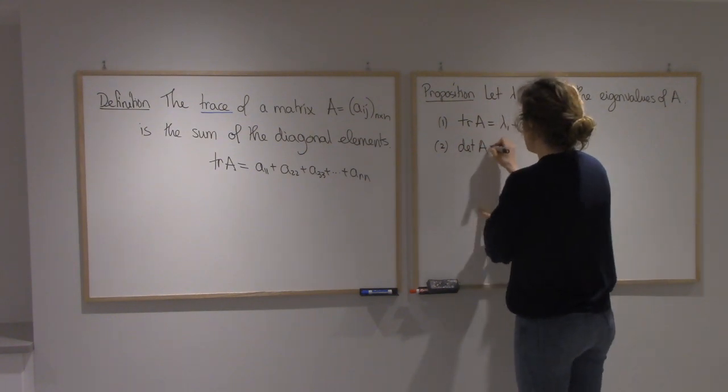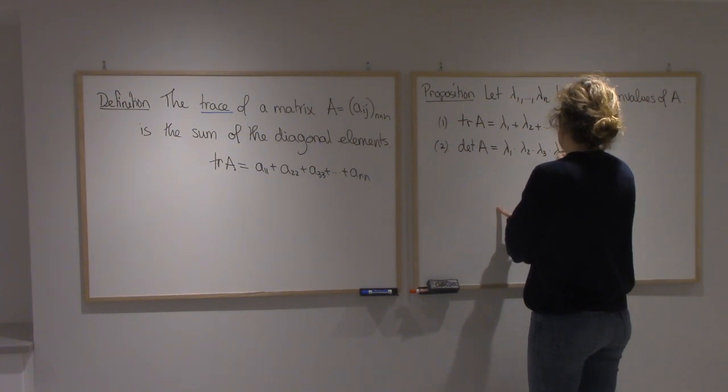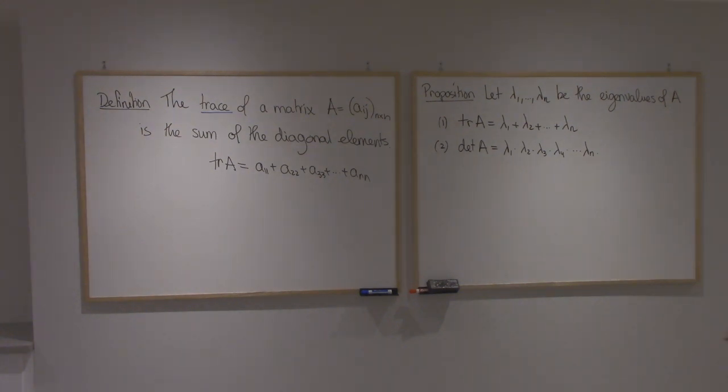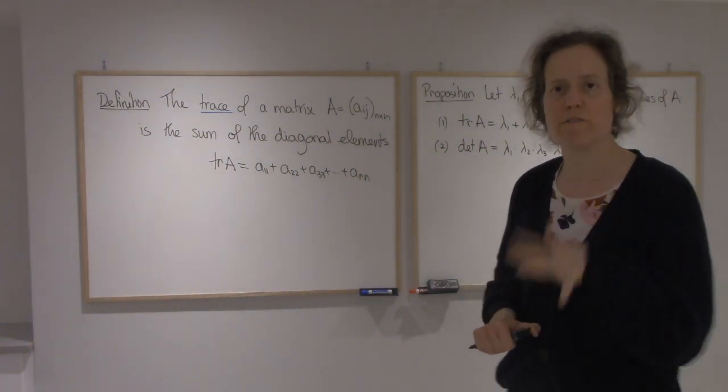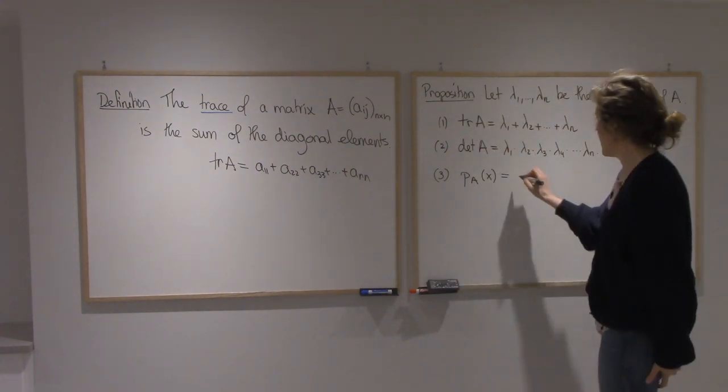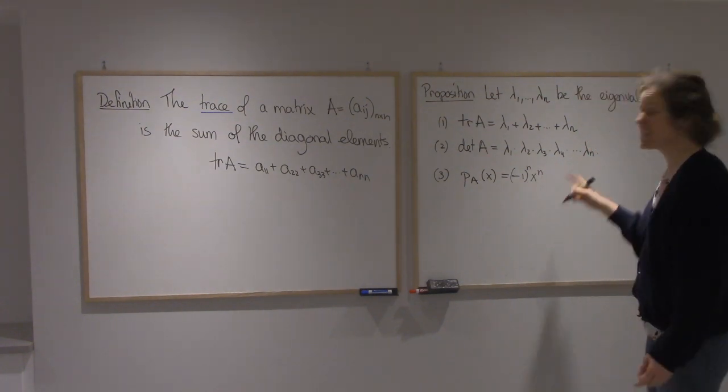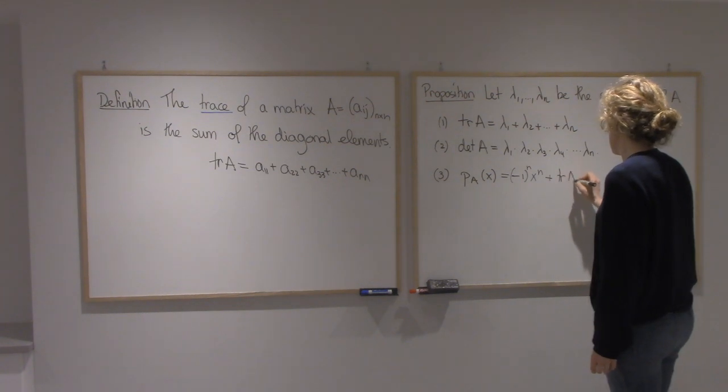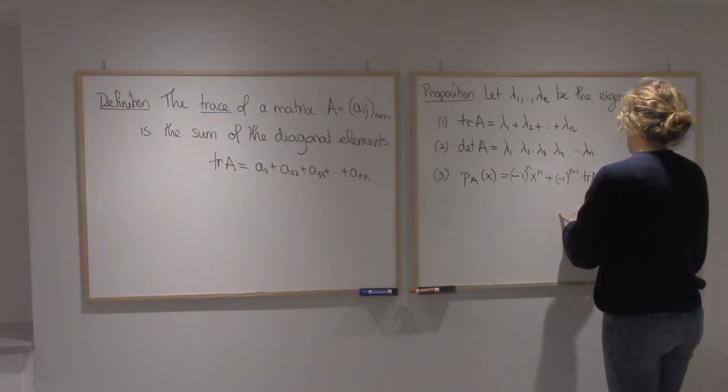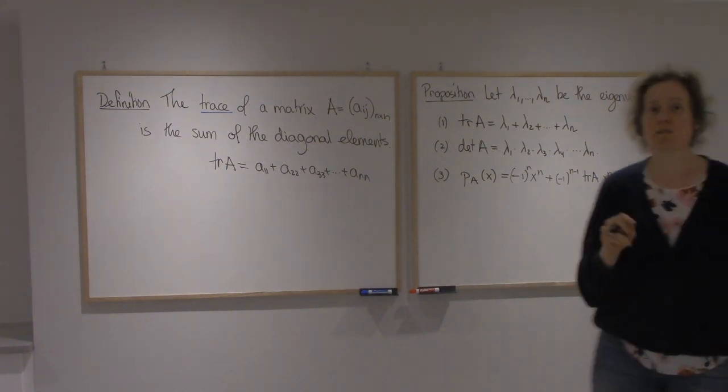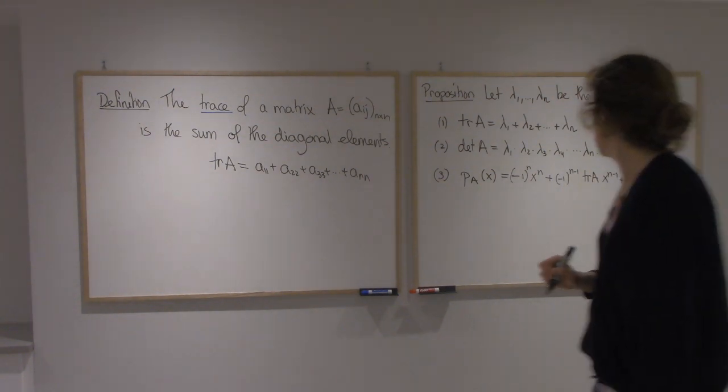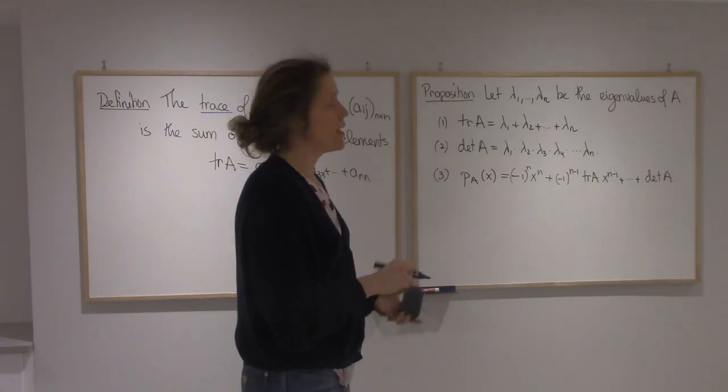The determinant of A would be the product of the eigenvalues. In fact, part of the reason why this is true is we can figure out some of the coefficients in the characteristic polynomial. The characteristic polynomial of A would have (-1)^n times x^n. The second term is going to be the trace, and the constant term will be the determinant. Once you have this, you can prove propositions 1 and 2 easily.